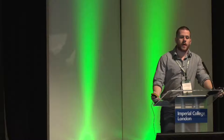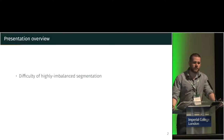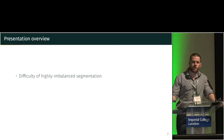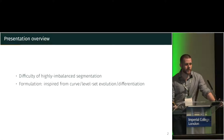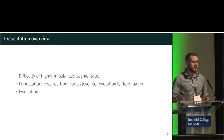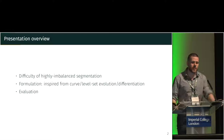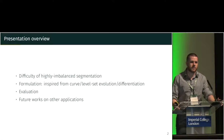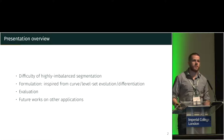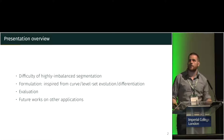I will present the paper Boundary Loss for Highly Unbalanced Segmentation. First, I will discuss the difficulty of highly imbalanced segmentation problems and how and why using boundary information could be useful. Then I will present information inspired from decades of literature in curve and level set evolution, followed by evaluation on two highly imbalanced brain datasets, and preliminary results on other applications.